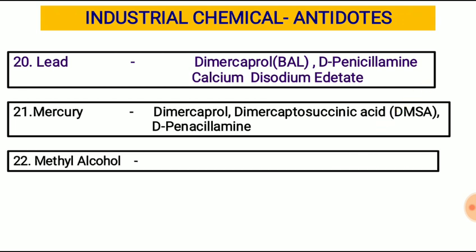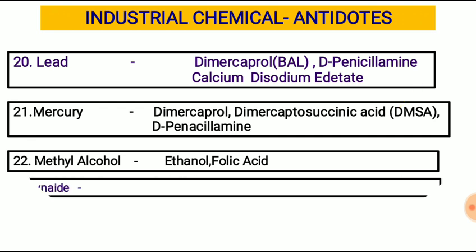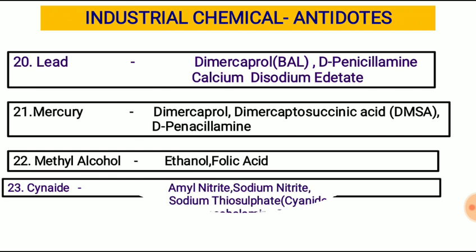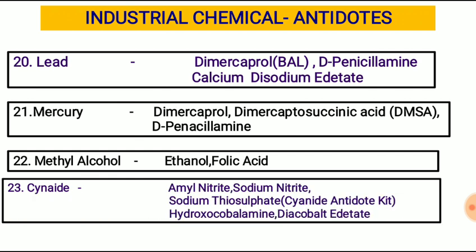Next, methyl alcohol: the antidote is ethanol and folic acid. Cyanide: the antidote is a cyanide antidote kit. The cyanide antidote kit contains amyl nitrite, sodium nitrite, and sodium thiosulfate. Other antidotes for cyanide include hydroxocobalamin and dicobalt edetate.